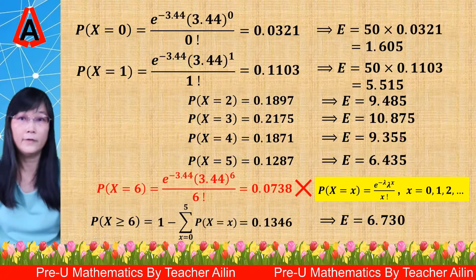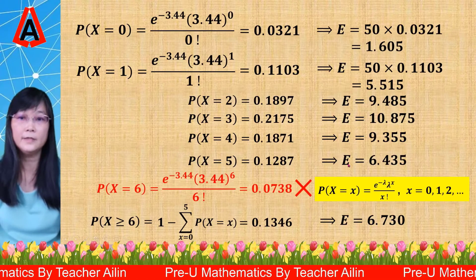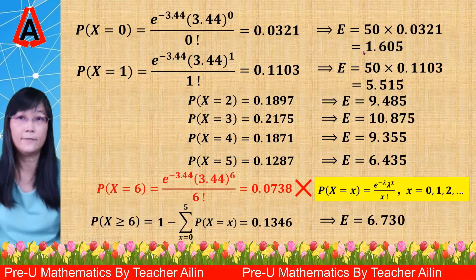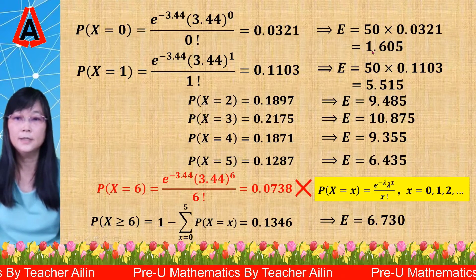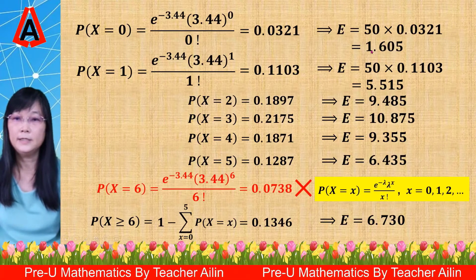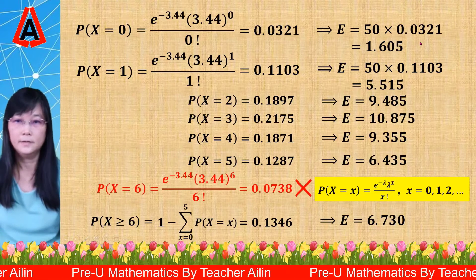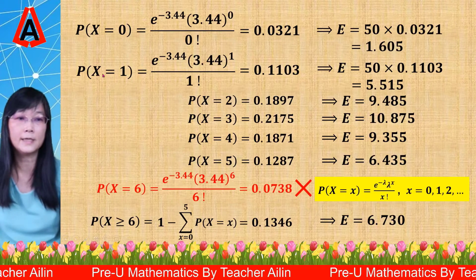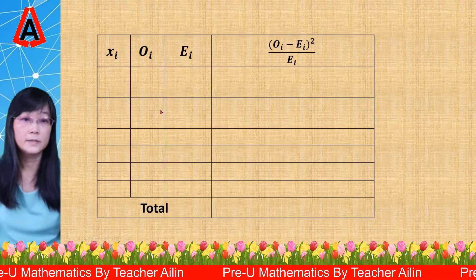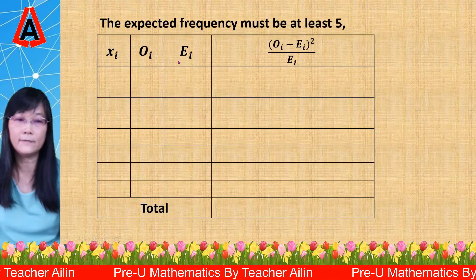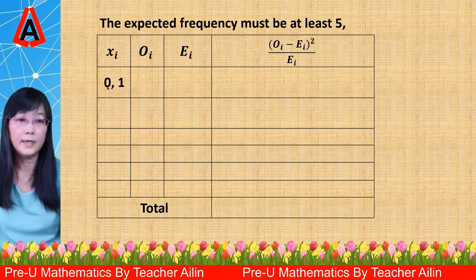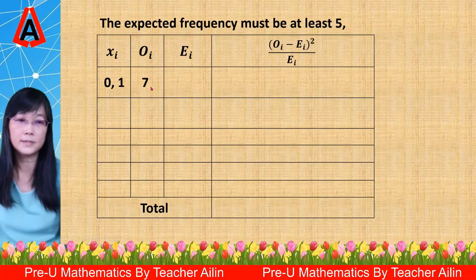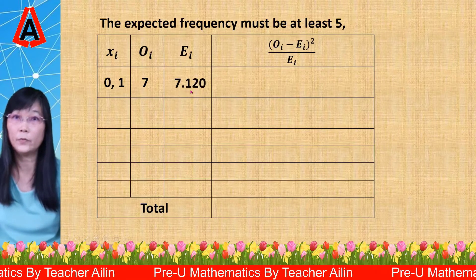Now we have all the E values and we are going to combine everything in a table. Before doing so, we must check: if any E value is less than 5, we need to combine classes. The first class where x equals 0 has E equal to 1.605, which is less than 5, so it must be combined with the next class where x equals 1. After combining, the observed frequency O becomes 7, and E becomes 7.120.